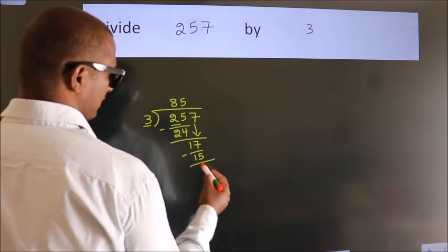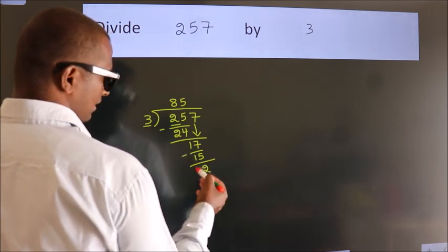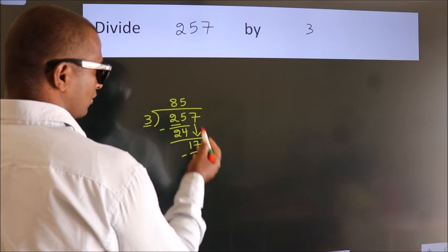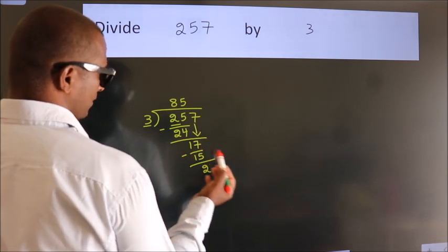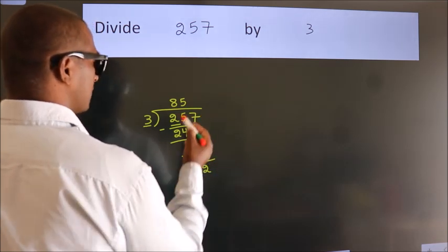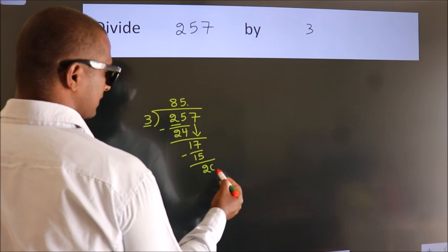Now, we subtract. We get 2. After this, no more numbers to bring down. So what we do is, we put a dot and take 0.